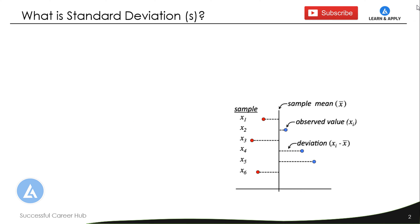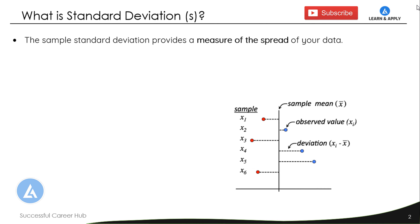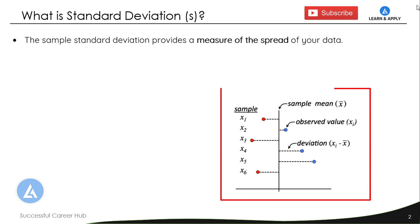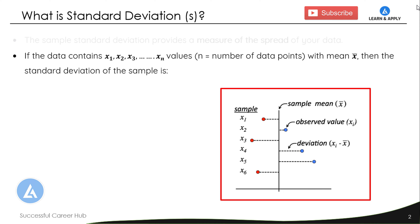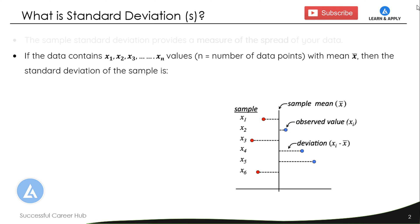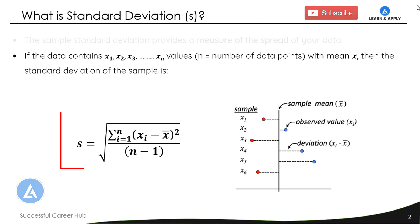In the last video, we had seen what is standard deviation, which is indicated by either S or sigma. The sample standard deviation provides a measure of spread of your data — that is, the measure of dispersion or variation of all data points with respect to the mean value. If the data contains x1, x2, x3 up to xn values, where n is the total number of data points with mean x-bar, then the sample standard deviation is calculated as: S equals the square root of the summation from i equals 1 to n of (xi minus x-bar) squared, divided by n minus 1.